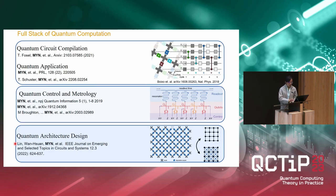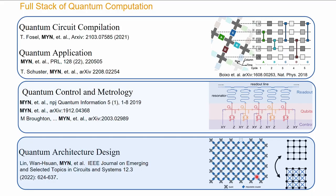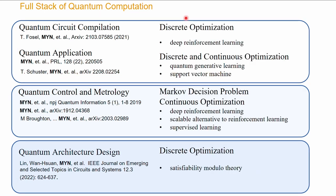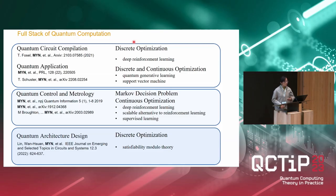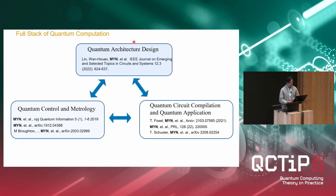In this quantum stack, at the very bottom is quantum architecture design — this includes how we couple the qubits. One level higher, we have quantum control. One level higher still, once we have the gate, we can implement quantum circuits and need to optimize them. Every single layer of these can really benefit from machine learning, because the fundamental problem is either discrete, continuous, or discrete and continuous optimization.